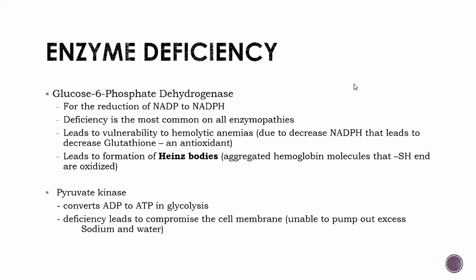Another enzyme deficiency is pyruvate kinase, which converts ADP to ATP in glycolysis. Without pyruvate kinase, RBCs cannot produce ATP. Without ATP, the ion pumps of the RBC fail, causing the cells to swell or shrink. Swollen or shrunken RBCs are detected by the spleen as abnormal and destroyed, leading to anemia.